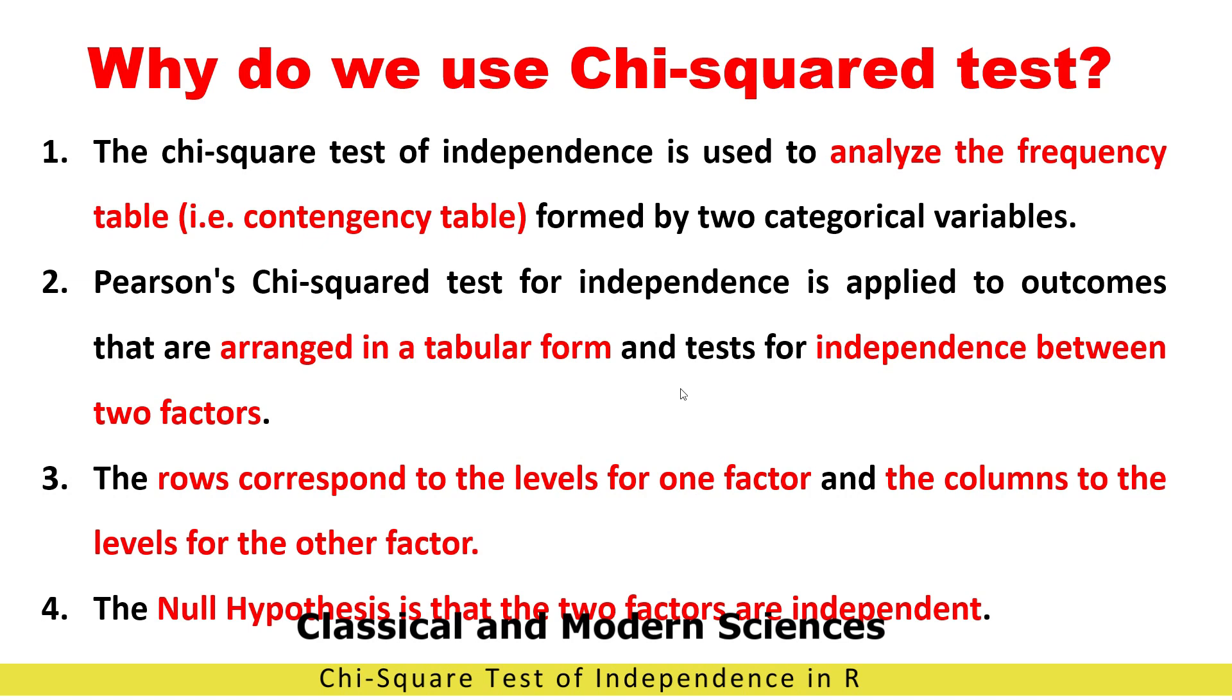The null hypothesis is that two factors are independent. It means that we will arrange one factor, we will give heading of one factor in column and heading of other factor in the row.